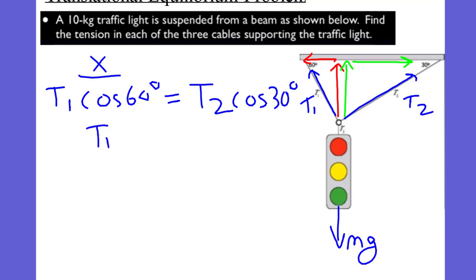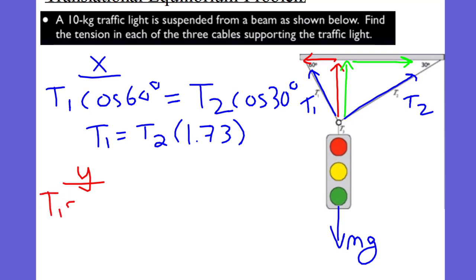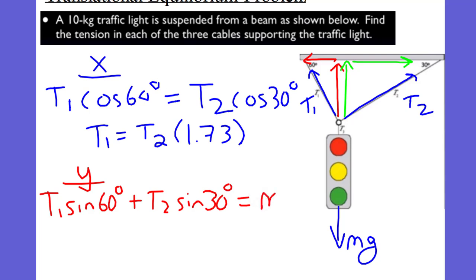Tension one equals tension two times 1.73 — that is what cosine of 30 degrees divided by cosine of 60 degrees would be. Now, if we look in the Y direction, our tension one sine of 60 degrees plus our tension two sine of 30 degrees will be equal and opposite to that mass times gravity. We know what mass times gravity is: we have the 10 kilogram traffic light times 9.8 meters per second squared.